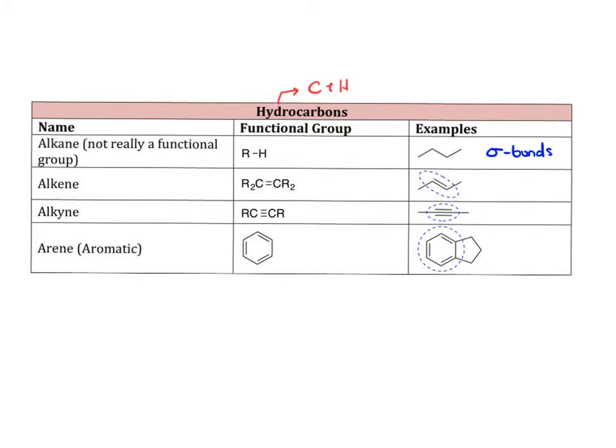Next, we have the alkene, which is a carbon-carbon double bond. Here I've used, generically used the R abbreviations. Here's an actual example. So the double bond is the alkene.